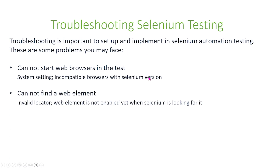Another problem is when you can't find a web element, and this can happen for a bunch of different reasons. The first reason is you're simply passing an invalid locator — you're not passing the right locator. So you can go back to your website that you're testing and inspect and grab the proper locator for it.